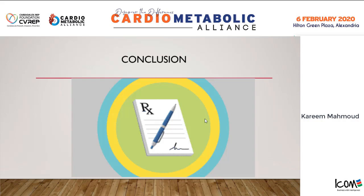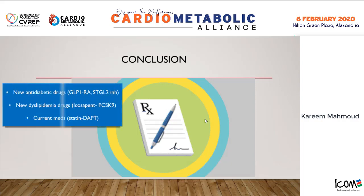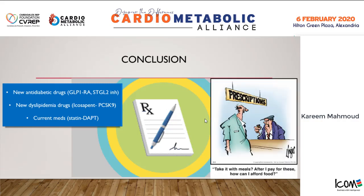In conclusion, we now have a prescription where we can add drugs with beneficial effects for our cardiac patient at very high risk. This includes new antidiabetic drugs with proven cardiovascular outcomes, as well as new dyslipidemia drugs such as icosapent ethyl and PCSK9 inhibitors if the patient is not achieving LDL and triglyceride goals, in addition to current medications. This will come at an increased cost, but I think we now have an answer when our patient asks how to improve cardiovascular outcomes and prevent future cardiovascular events. Thank you.